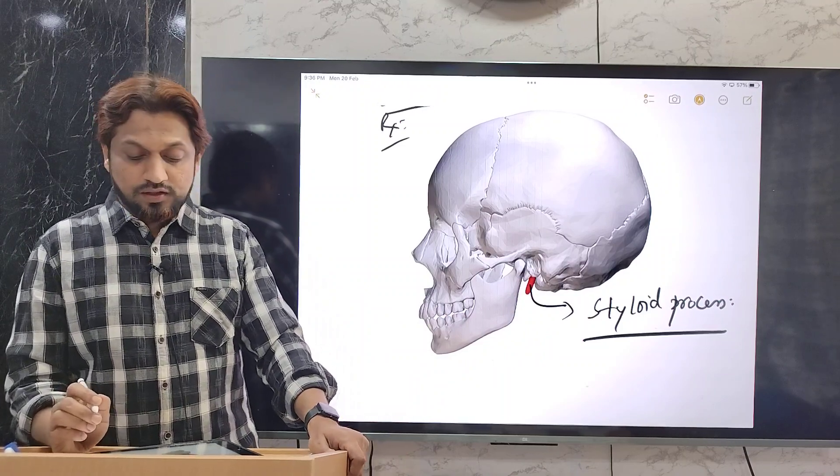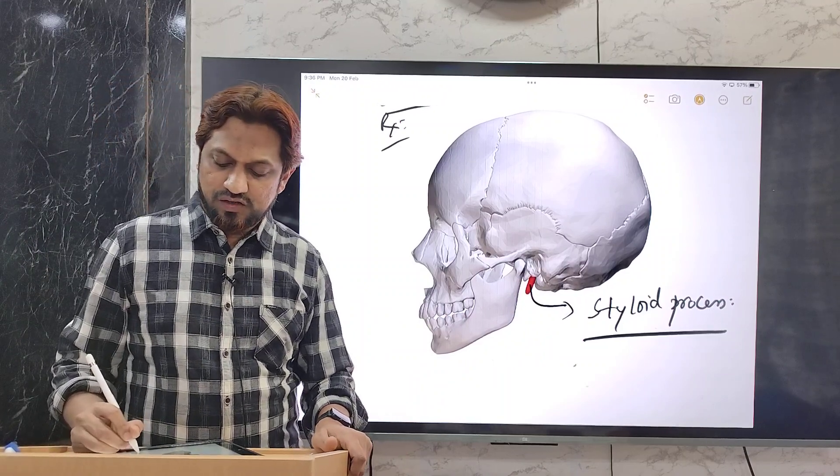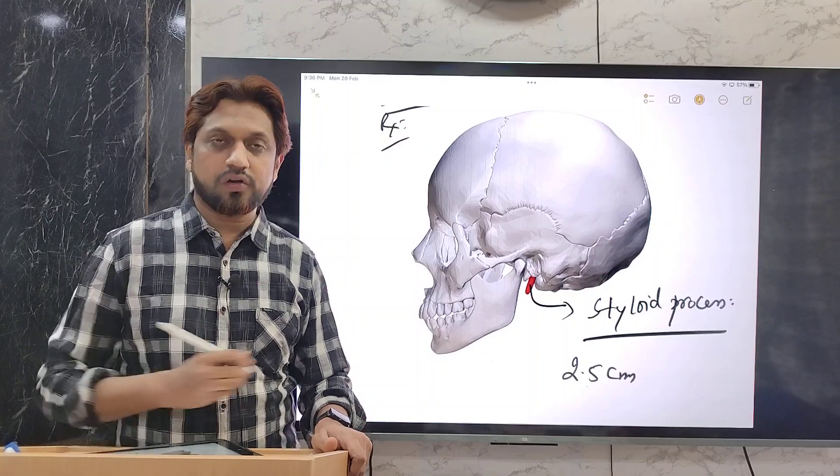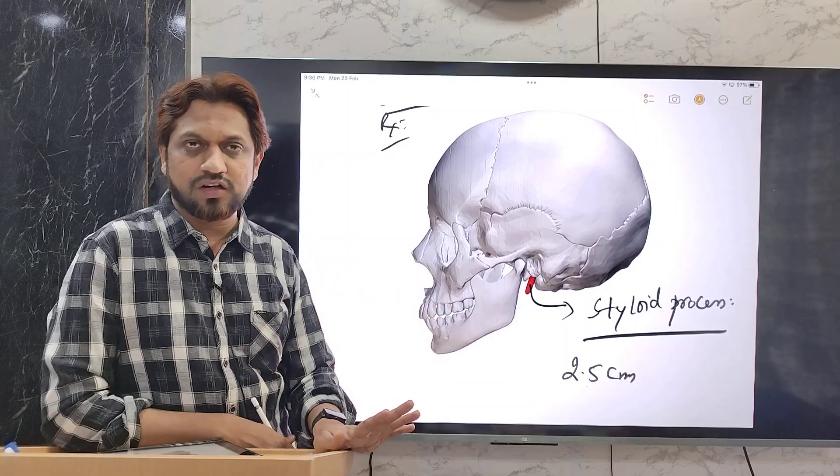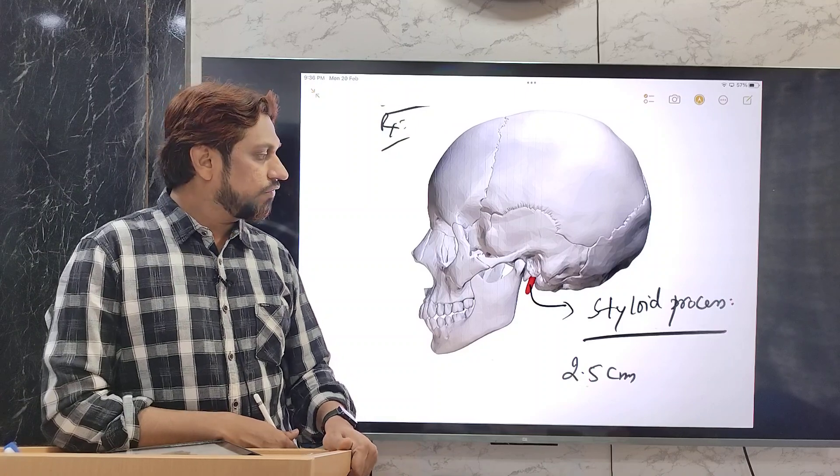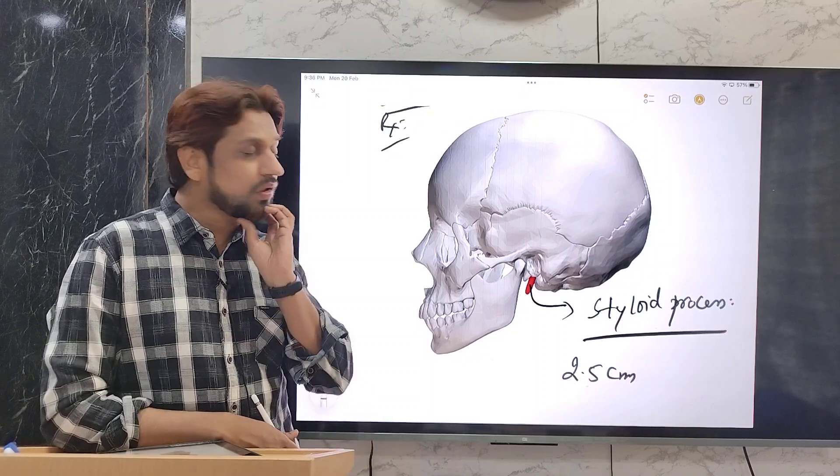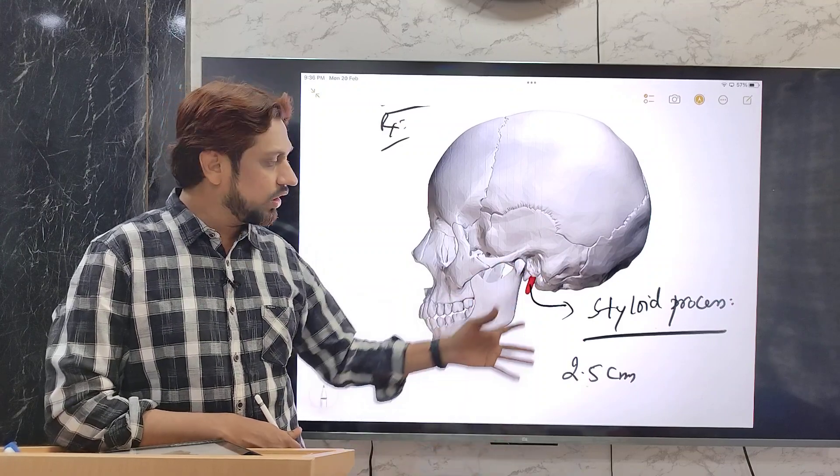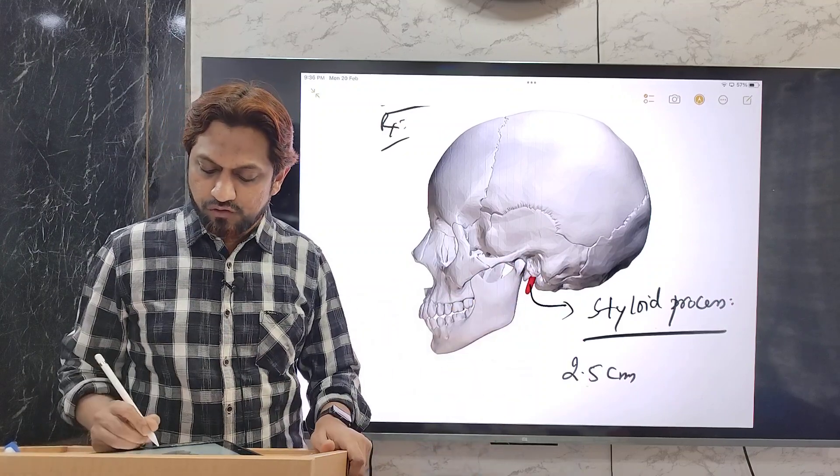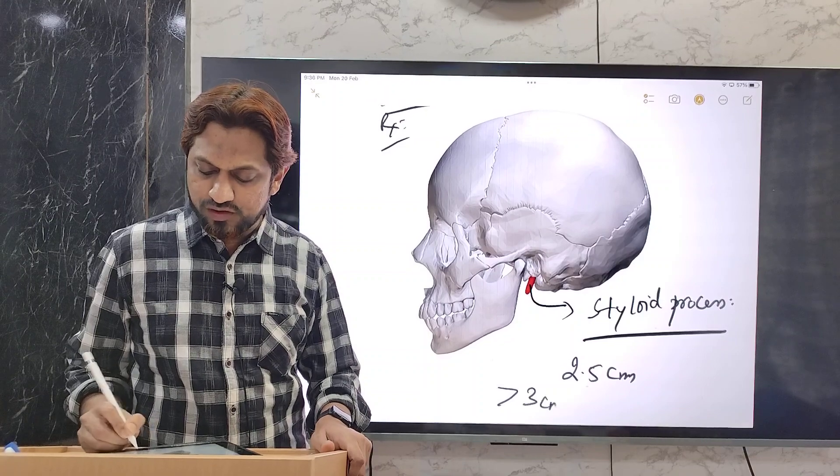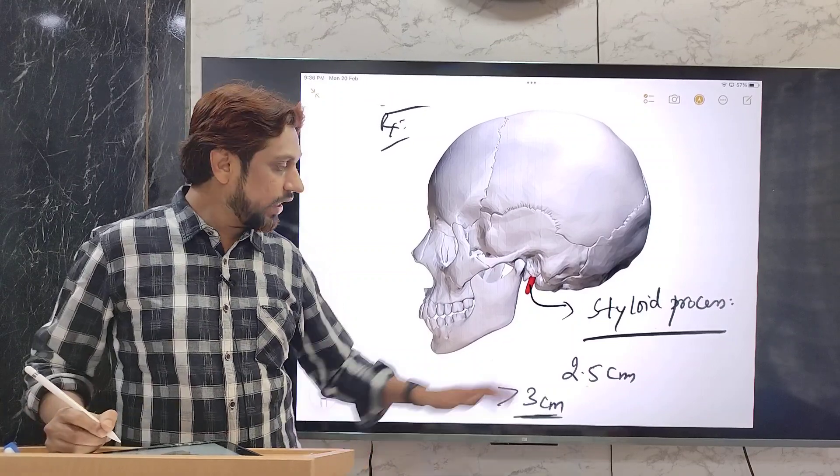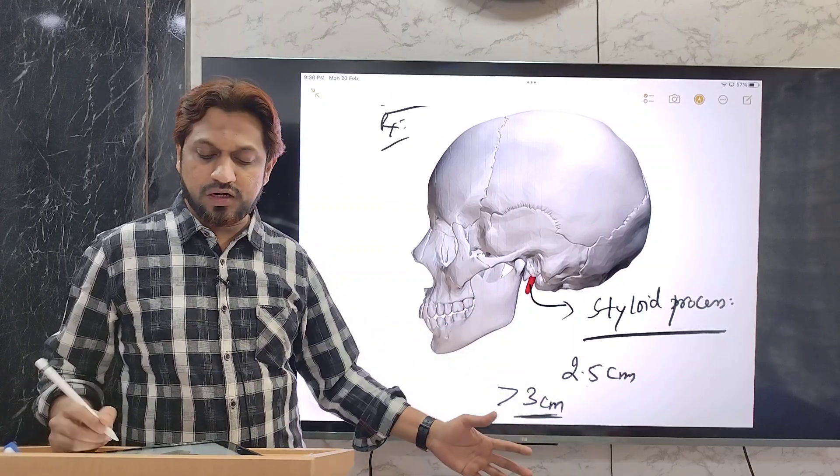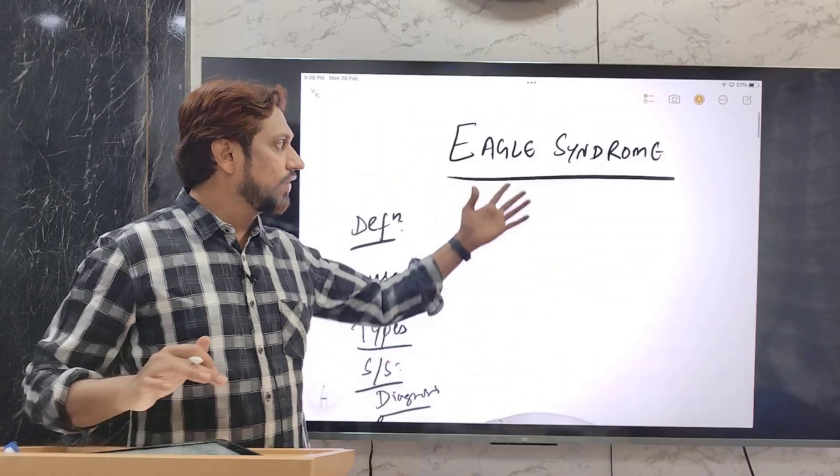This styloid process generally, it is about 2.5 cm. Generally the size of the styloid process in adults is around 2.5 cm. But in few conditions, this styloid process sometimes the size will get increased. If it is increased for more than 3 cm, or up to 4 cm, then that clinical condition simply known as Eagle Syndrome.